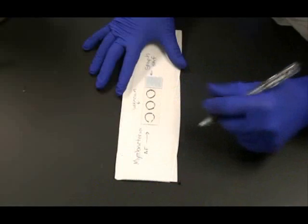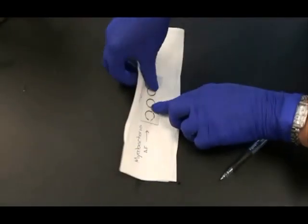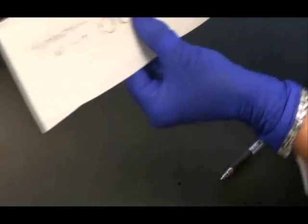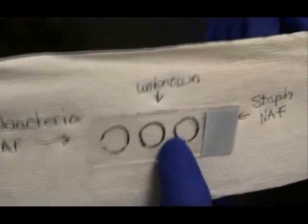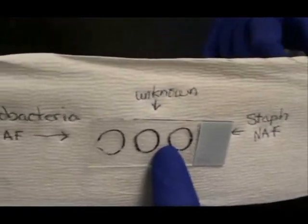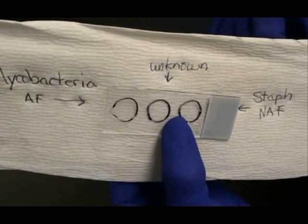It can be helpful to label a paper towel with the names of the samples you'll be using for this slide. I'm going to use Mycobacterium smegmatis on the left as my acid-fast control, Staphylococcus epidermidis on the right as my non-acid-fast control, and my unknown will go in the middle.